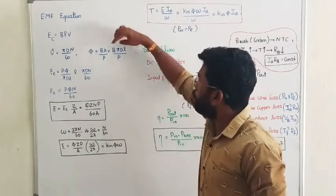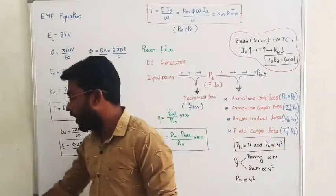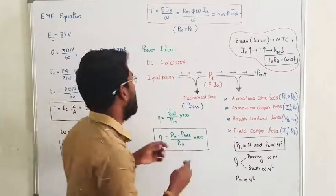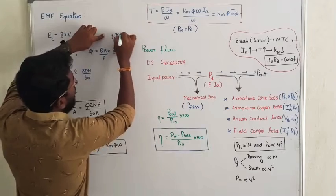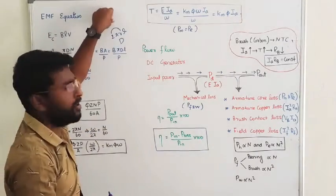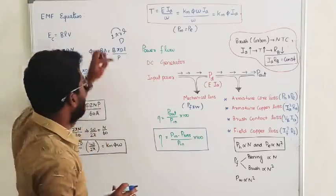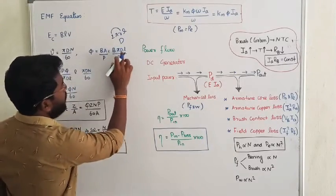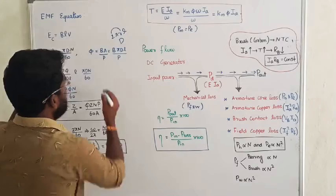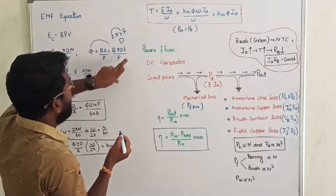Since we are discussing a cylinder, the area of a cylinder is 2πrl, which can be written as πdl, where d is the diameter of the rotor and l is the axial length. So the area is πdl.